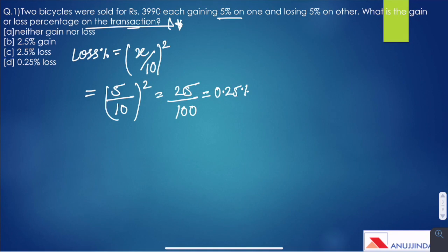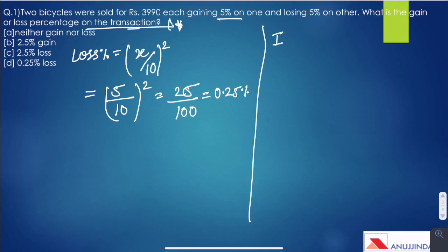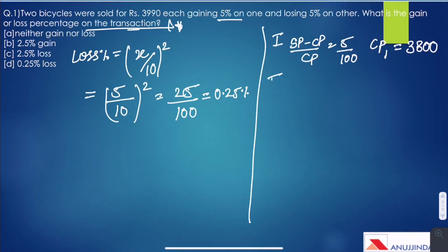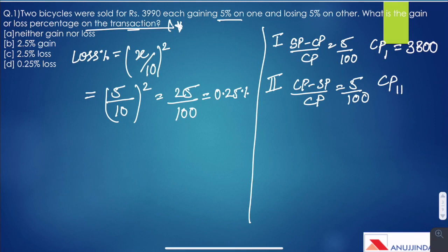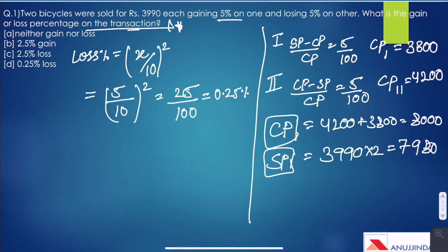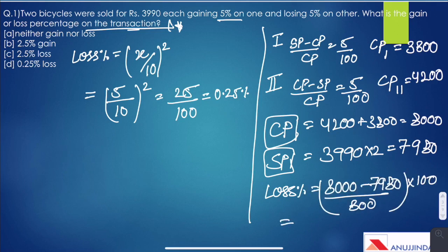If you don't know this shortcut method, you can solve it the long way as well. Find the CP of the first bicycle, which comes out to be 3,800 rupees. The CP of the second bicycle, which incurred a 5% loss, comes out to be 4,200 rupees. Total CP is 8,000 rupees. Total SP is 3,990 × 2 = 7,980 rupees. Loss percentage again gives us 0.25%. Although you can solve it this way, to save time remember this trick which is universal in nature.